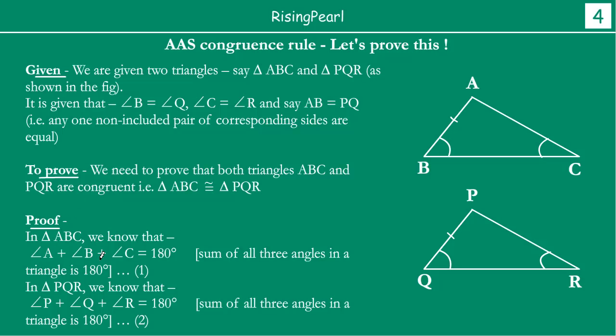So in the proof, we have a given section, then we have to prove section, and now here is the actual proof. In triangle ABC, we know that angle A plus angle B plus angle C equals 180 degrees because sum of three angles in a triangle is 180 degrees. This is our first condition. Similarly, in PQR, P plus Q plus R equals 180 degrees. This is something you have seen when we talked about lines and angles and triangles, that when we write our statements and they are connected to some theorem, we actually write them in the bracket. That's why we write the reason immediately there that this is equal because the sum of all angles in a triangle is 180 degrees.